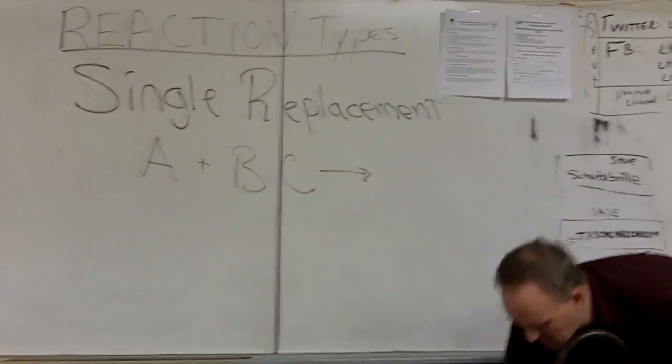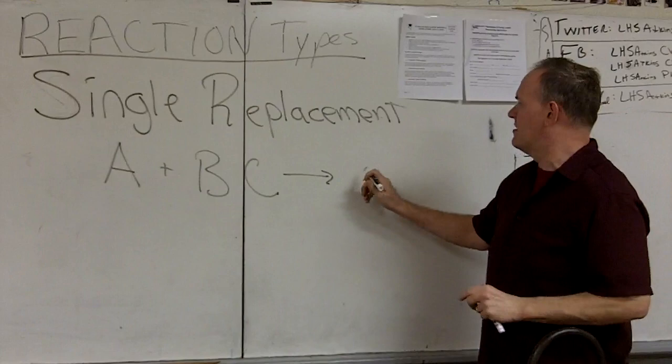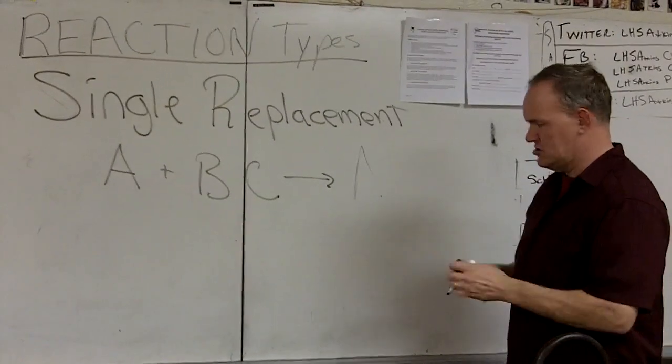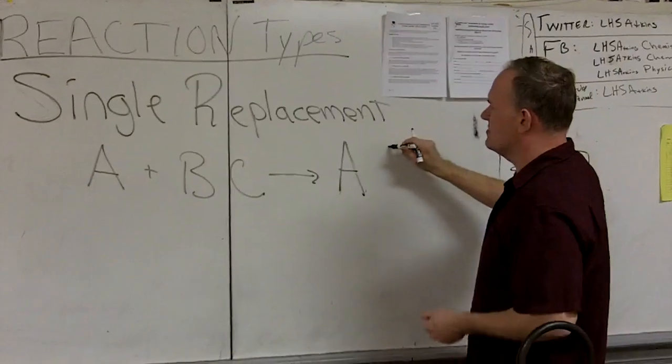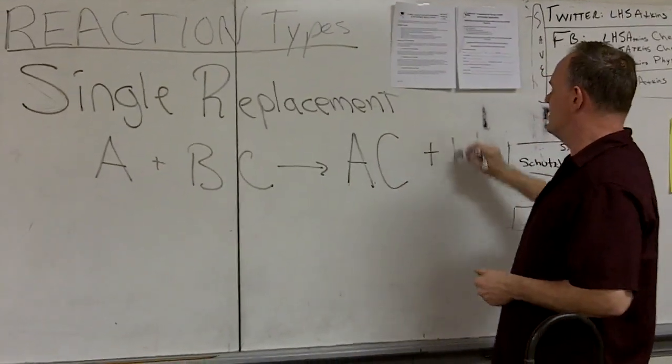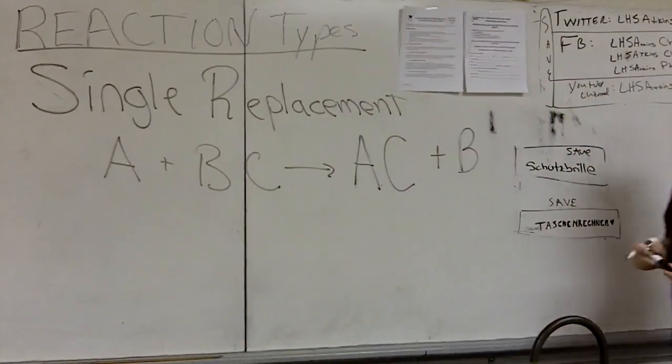You're going to have A with one of them. A would leave, for instance, with C, and then B would be left all by itself.